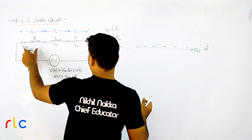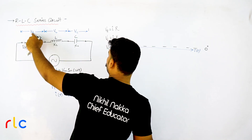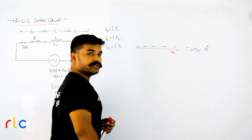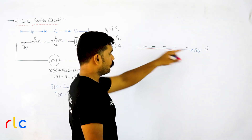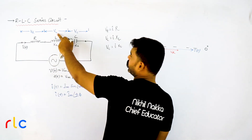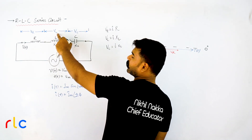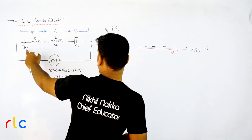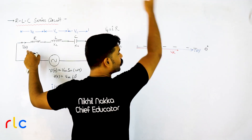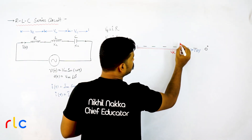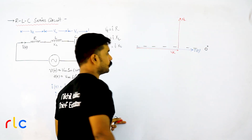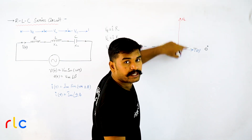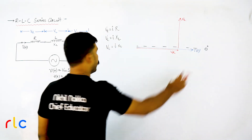In a resistor, VR and current are always at zero degrees, so VR is along the current vector. For the inductor, voltage VL leads the current by 90 degrees, so VL is drawn upward perpendicular to the current vector. Voltage across the inductor leads by 90 degrees.